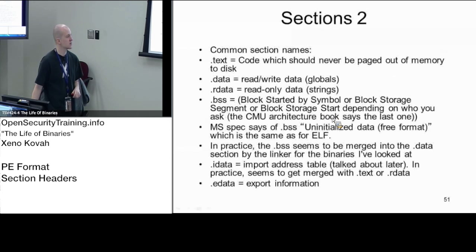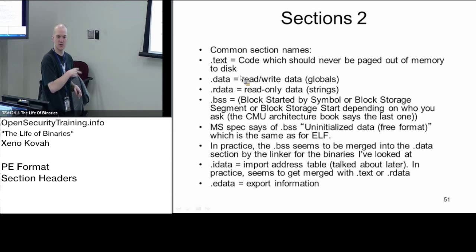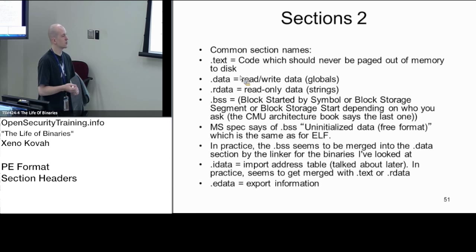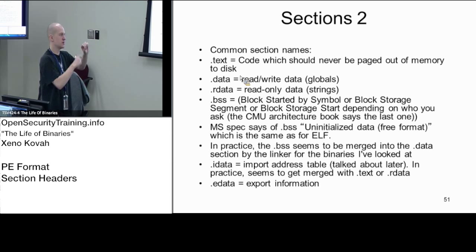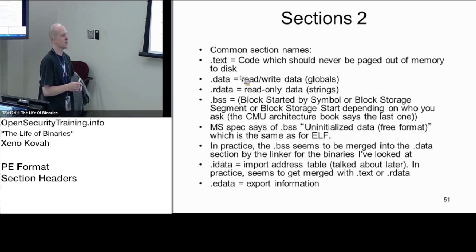These are common names you'll see across different operating systems and binary formats. It goes back to a long time ago when they were making the first compilers and the first sections. The .text section is where the actual code goes. On Windows in the context of the kernel, the .text section will ultimately be code which should not be paged to disk. Kernel modules will typically have one section where code can be paged to disk, but the .text section is always marked as non-pageable — there are flags on these sections that say don't kick this stuff out of memory.